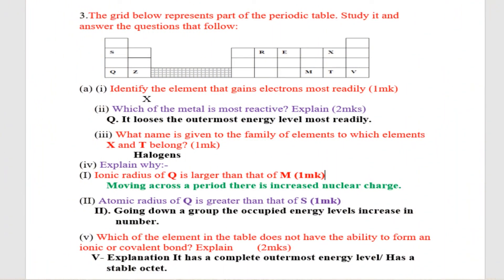Question number 3: The grid below represents part of the periodic table. Study it and answer the questions that follow. You are given elements with letters: S, Q, Z, R, E, X, M, T, and V. (i) Identify the element that gains electrons most readily. That one is X.